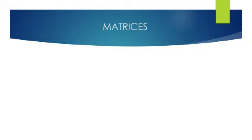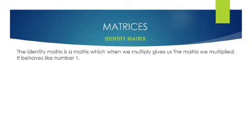Now another part of today's lesson is covering the identity matrix. What is an identity matrix? An identity matrix is simply a matrix which, when we multiply by it, gives us the matrix we multiplied it by. Hence we can say it behaves like the number one — whatever we multiply by one gives us what we just multiplied by. For example, one times two still gives us two, and one hundred times one still gives us one hundred. This is how an identity matrix behaves in matrices.